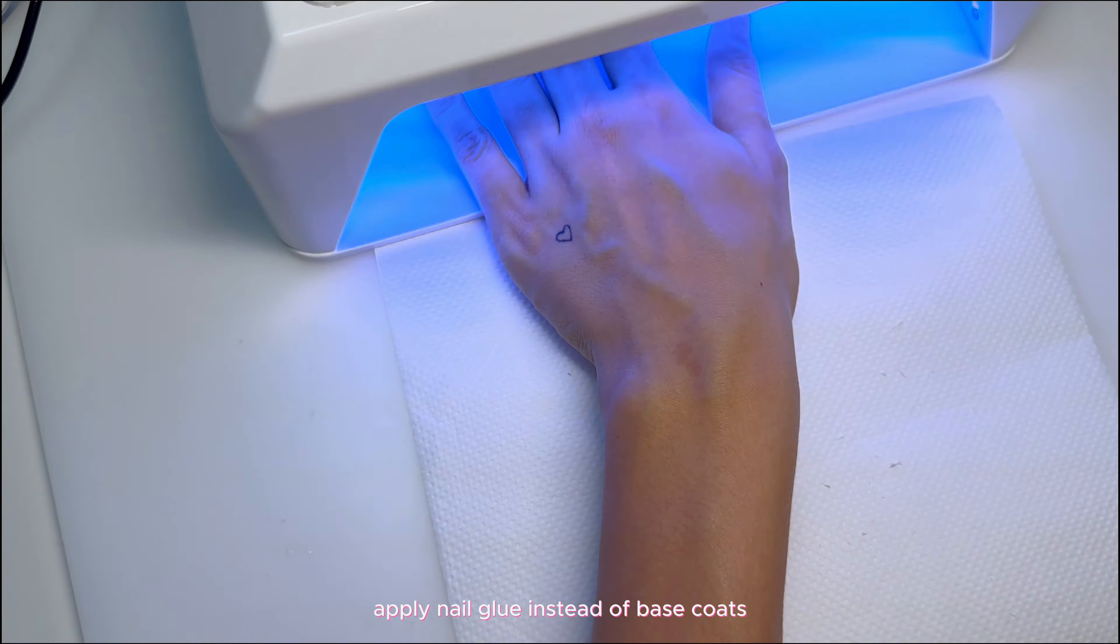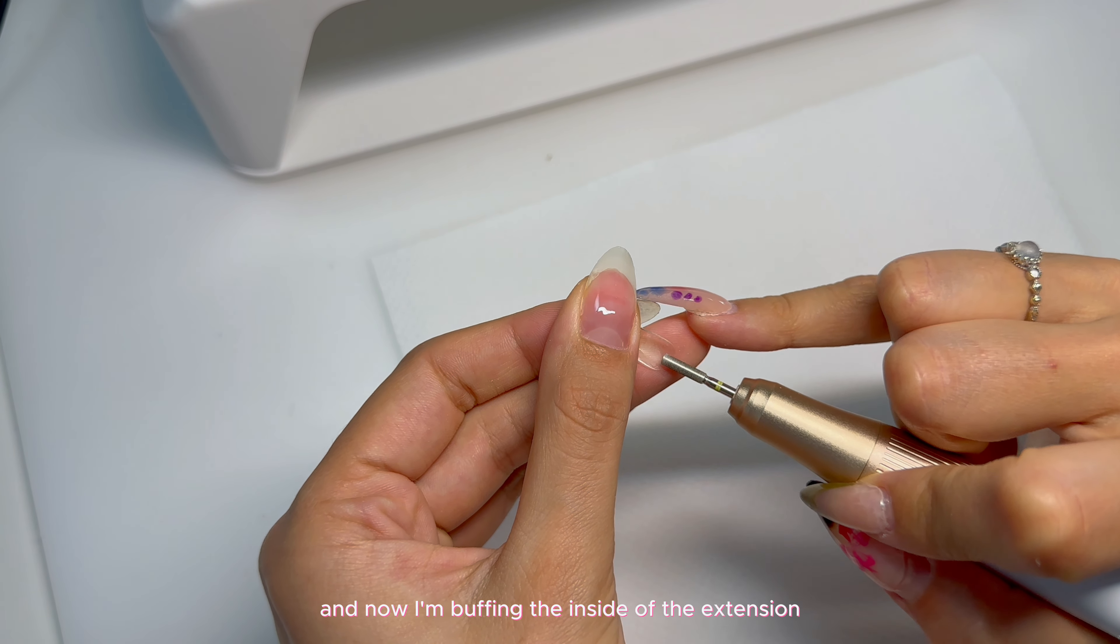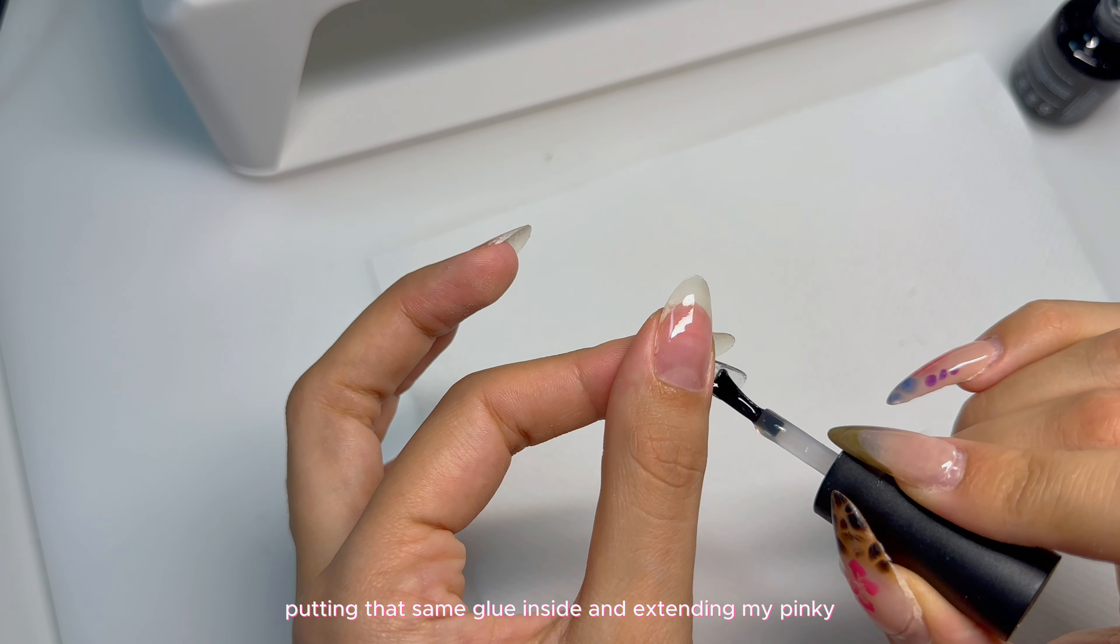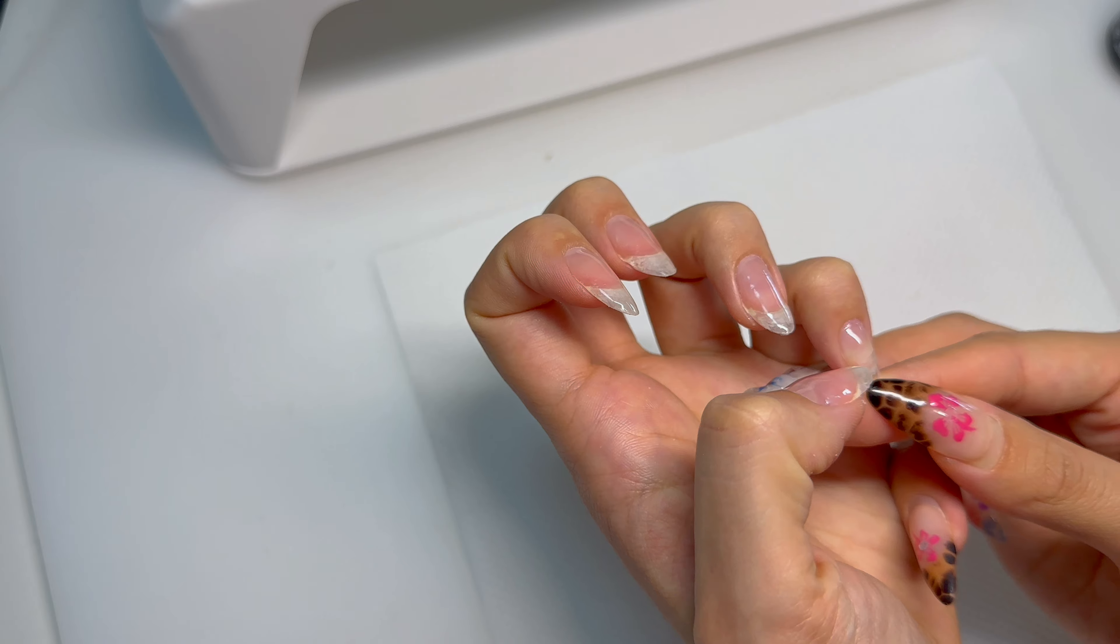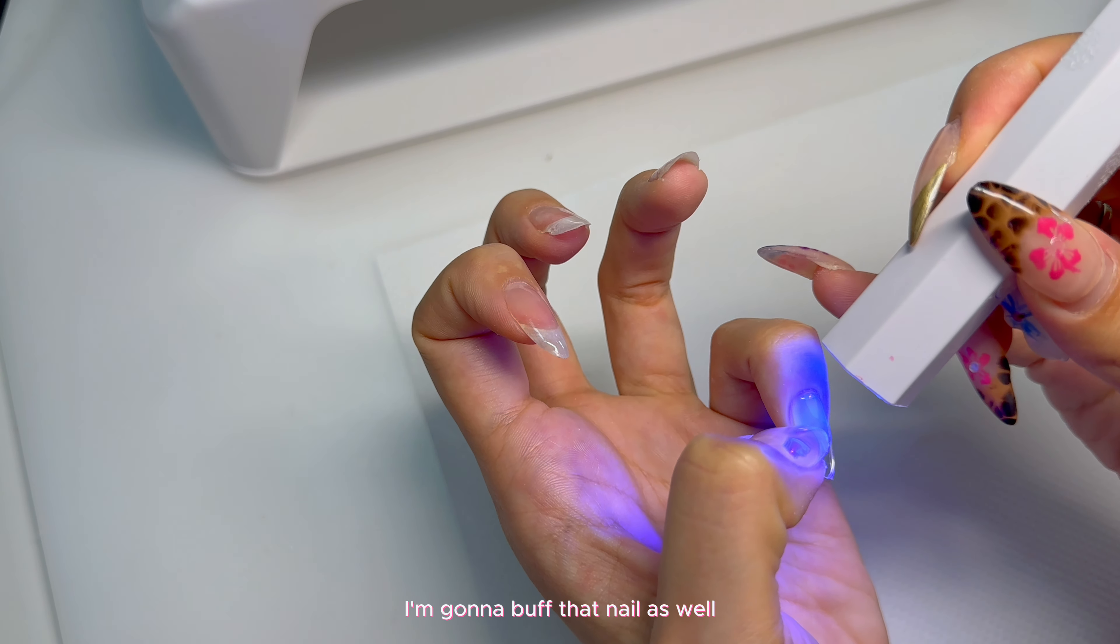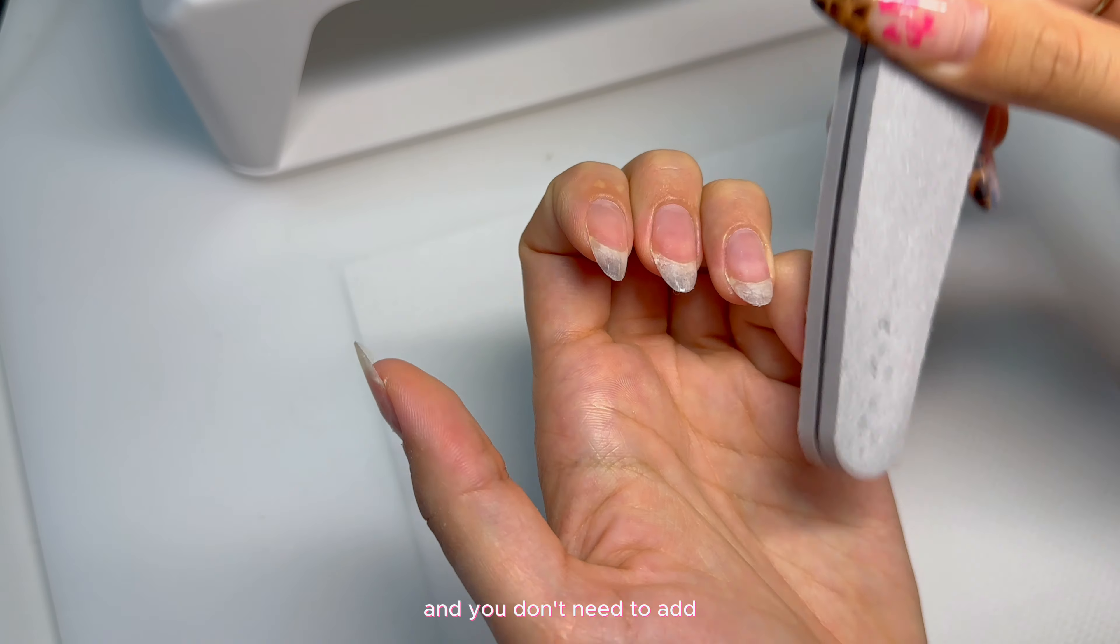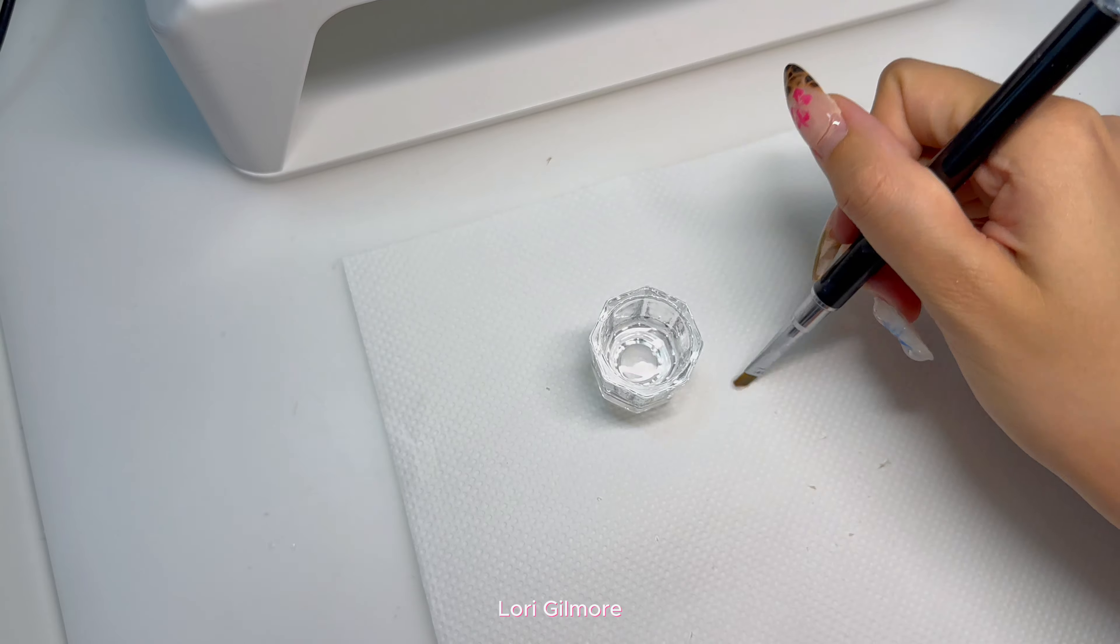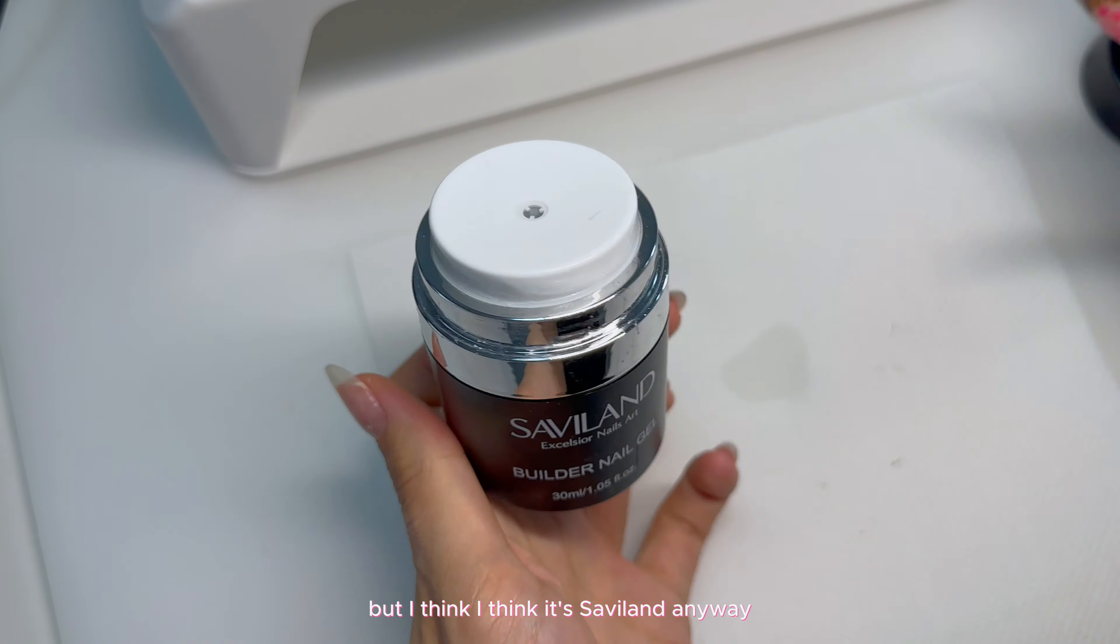Since I'm going to be applying gel extensions on my pinky, I'm going to apply nail glue instead of base coat for just that nail. And now I'm buffing the inside of the extension, putting that same glue inside and extending my pinky. I'm going to buff that nail as well so that everything is buffed and you don't need to add base coat on the extended nail.